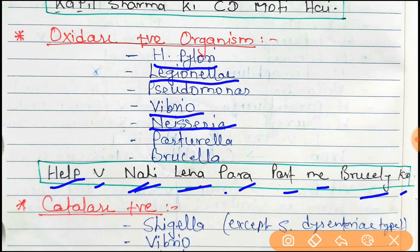'Para' stands for Pseudomonas; 'past me' for Pasteurella; and 'brusli ko' — Brusli for Brucella. These are all the oxidase positive organisms covered by this mnemonic.